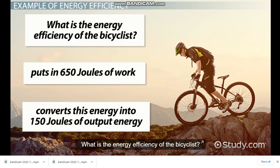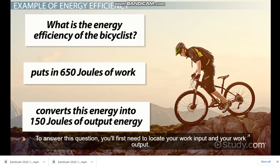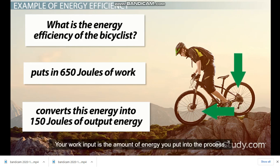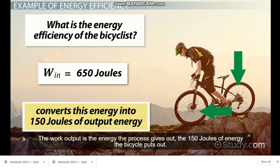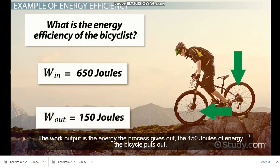What is the energy efficiency of the bicyclist? To answer this question, you'll first need to locate your work input and your work output. Your work input is the amount of energy you put into the process. In this case, the 650 joules from the bicyclist. The work output is the energy the process gives out, the 150 joules of energy the bicycle puts out.